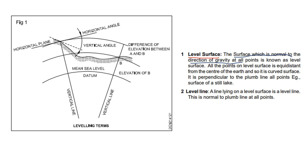All points on the level surface are equidistant from the center of Earth, so it is a curved surface. An example of a level surface is the surface of a still lake. This is a level surface.